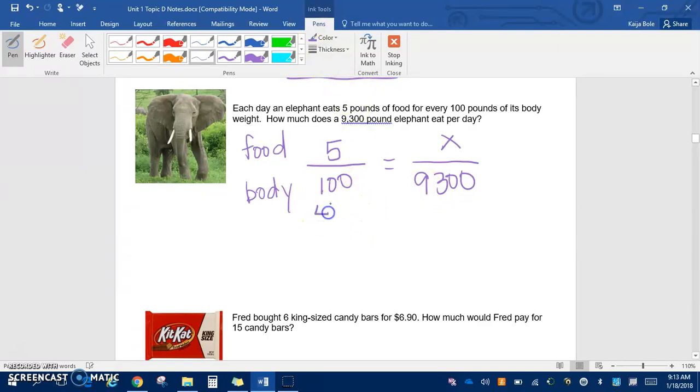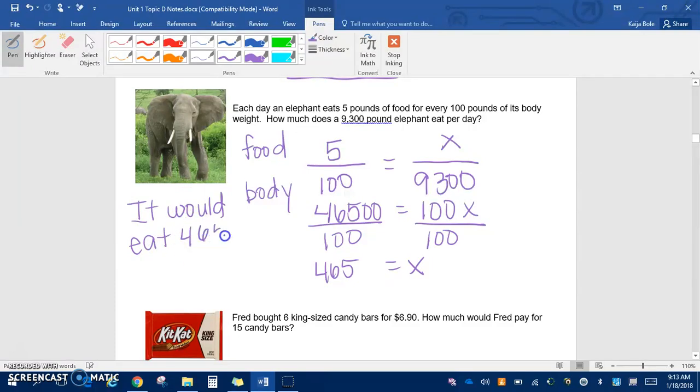Once you know that you have everything in line, then we're going to use our cross products. Here we're going to have 46,500 equals 100x. We divide by 100 on both sides. You would get 465 equals x, but we need some labels. So we would say that it would eat 465 pounds of food.